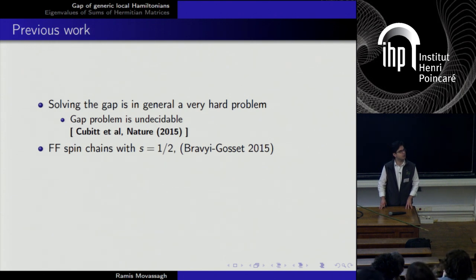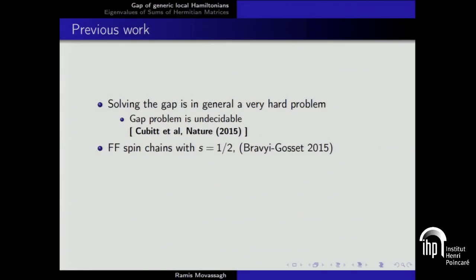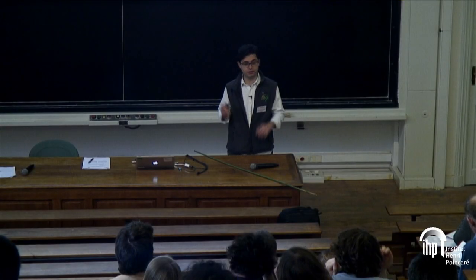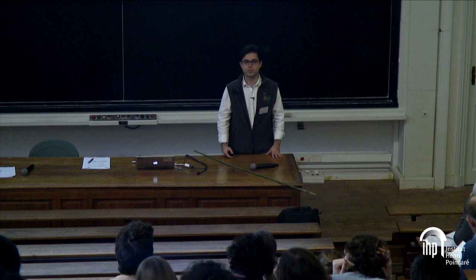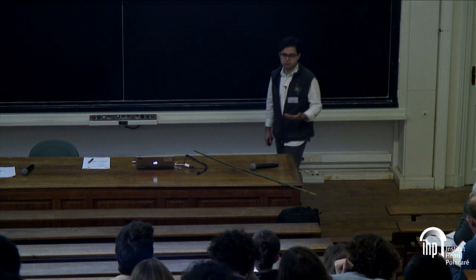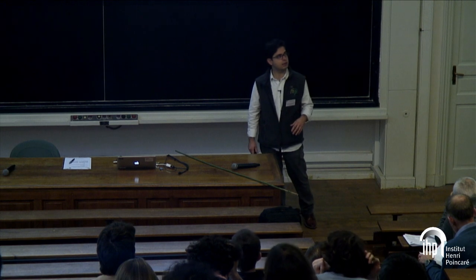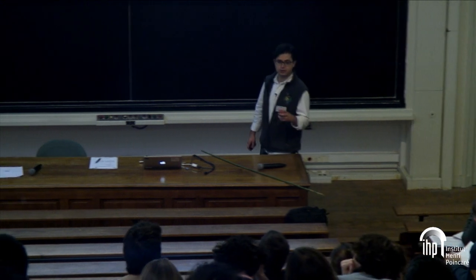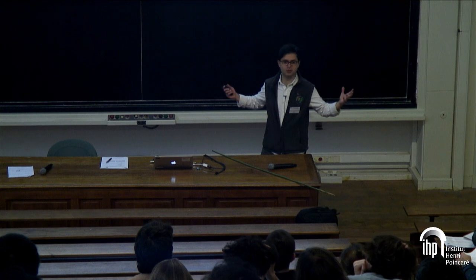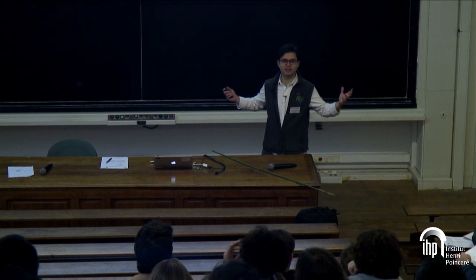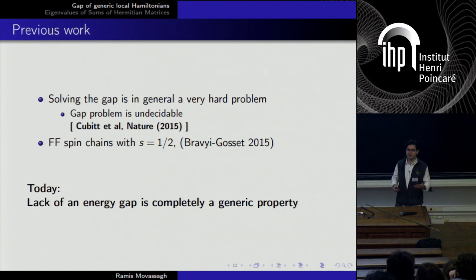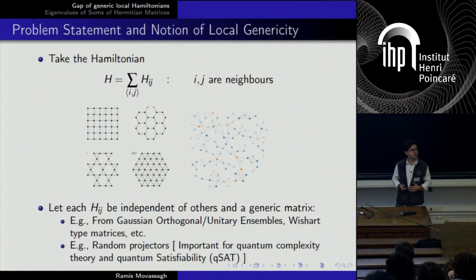A very recent result, 2015, shows that if you have rank-one projectors on a spin chain of qubits, then you can quantify the gapped and gapless phases — but the problem is for a translation-invariant system, and it tends to be really hard. It turns out that when you add genericity in local terms, you can do so much. So much comes out of the fact that you have independent random terms — you can solve the problem on many dimensions.